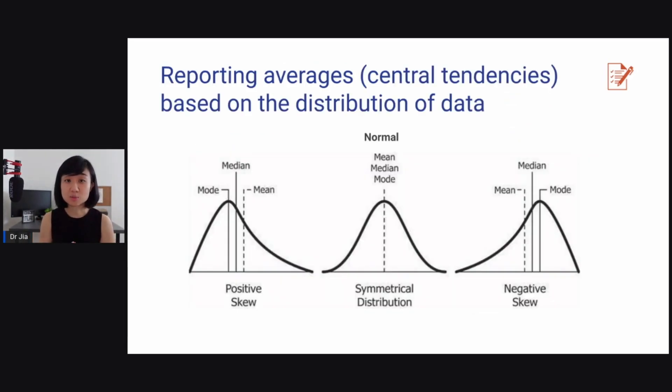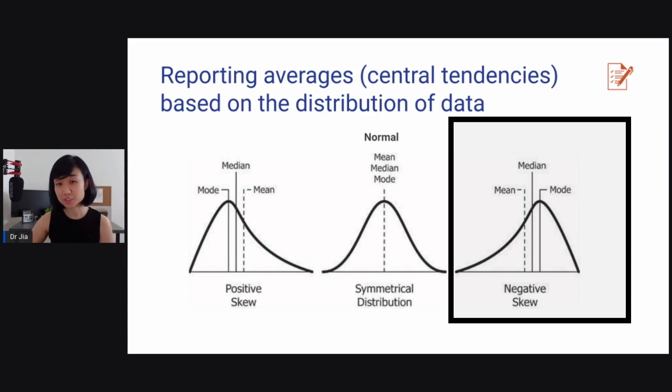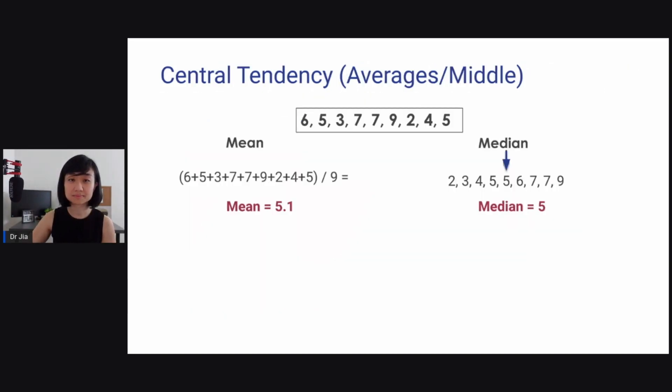We report averages or central tendencies based on the distribution of data. Look at this figure here. The right in the middle is a symmetrical distribution and so that's a normal distribution of data. And on the right is negatively skewed or just non-normal. And also on the left is positive skew, but non-normal. Let's talk about central tendencies. Look at this bunch of numbers. Six, five, three, seven, seven, nine, two, four, five. To get the mean, you add all these numbers and divide by nine and you get 5.1. And then what's median? Median, you sort them up from low to high and find the very middle point and that is the median.